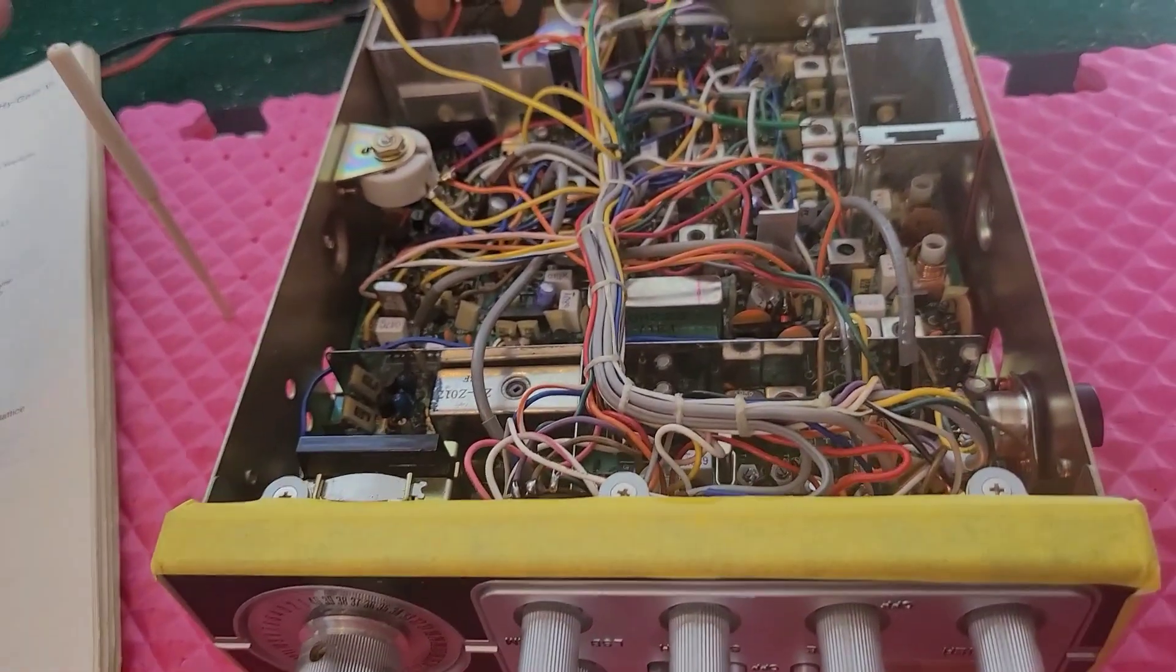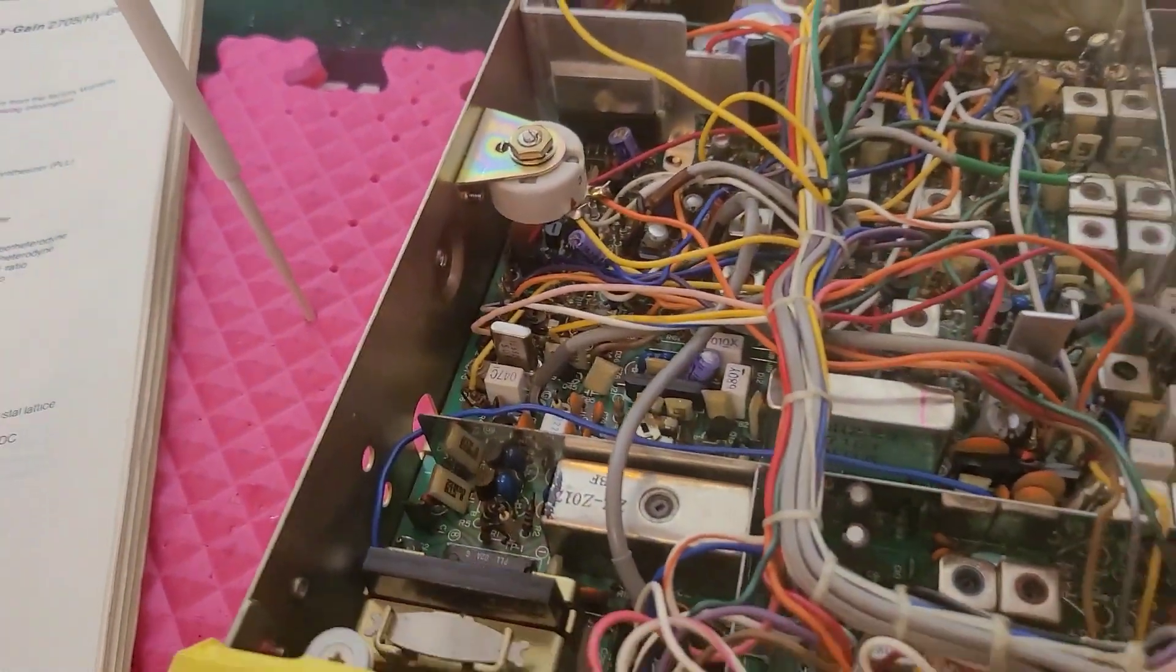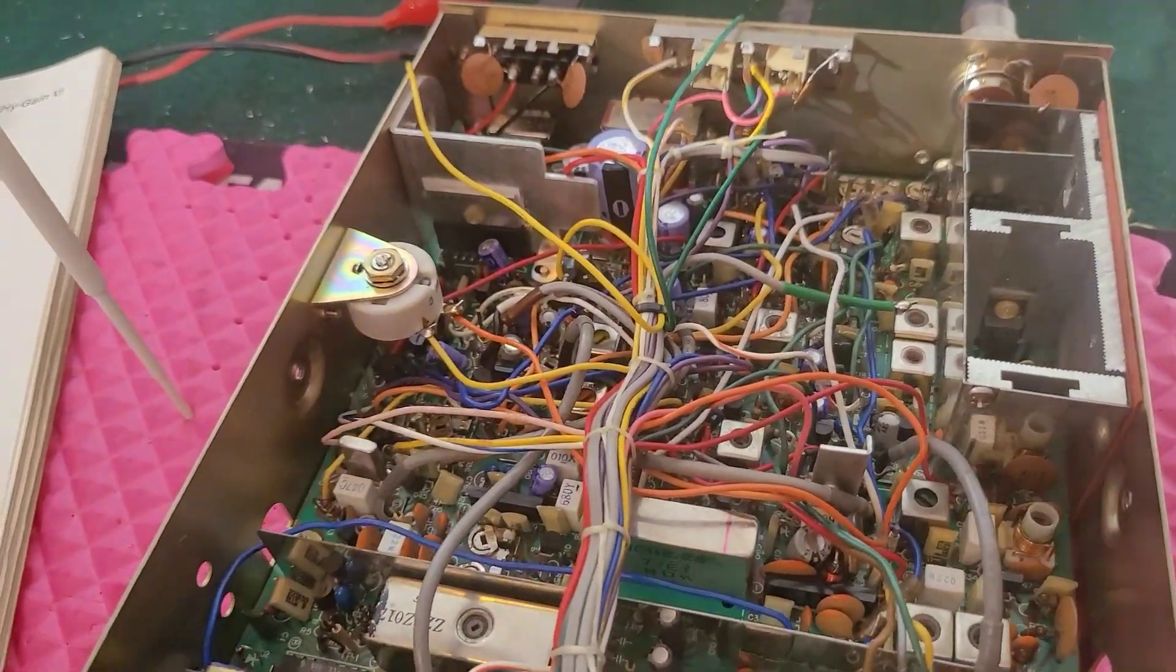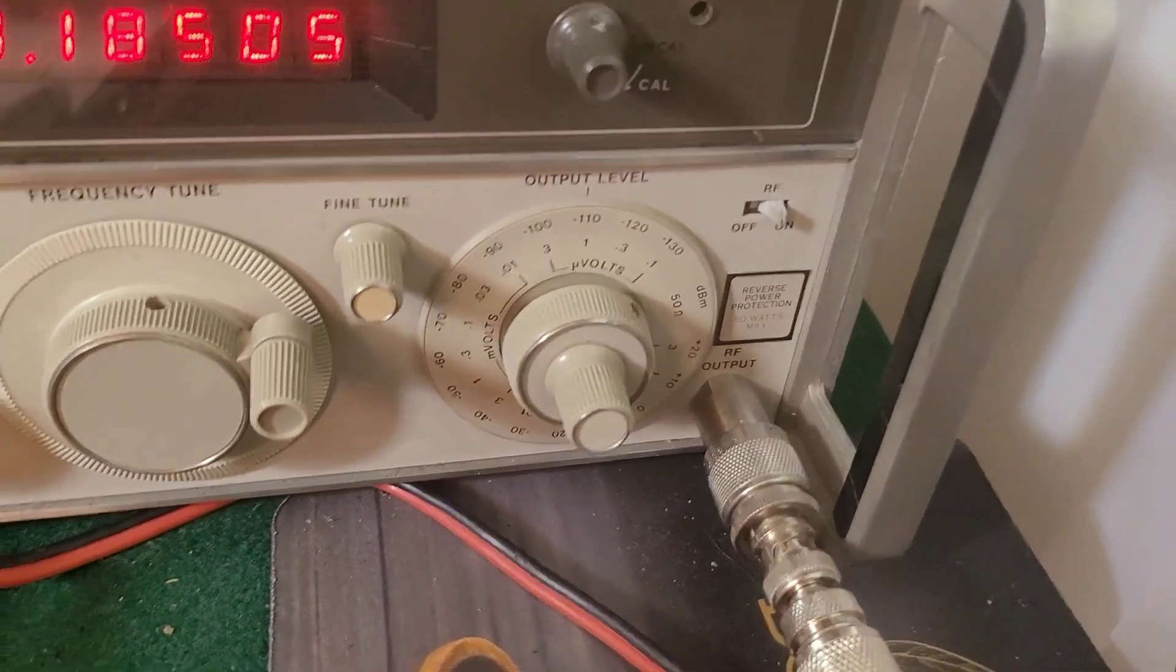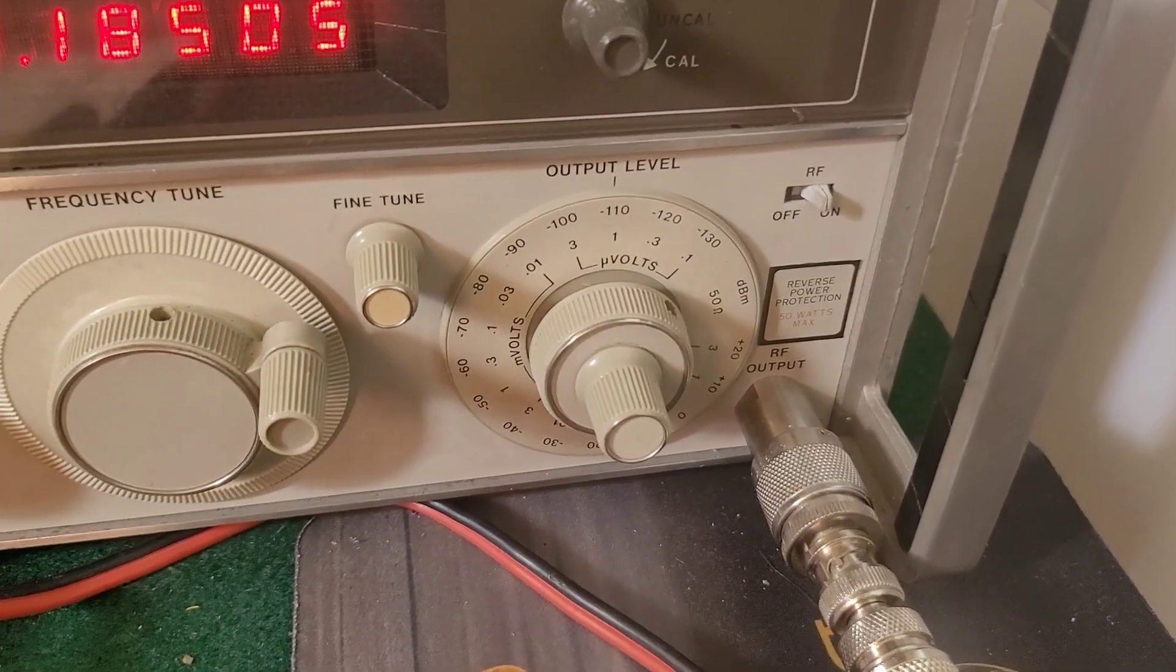Basically, this radio is getting fed a minus 110 dBm signal at 30% modulation. That's the SINAD measurement.